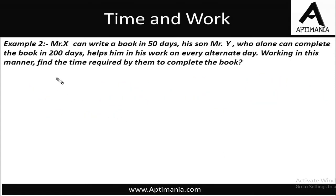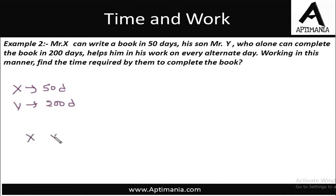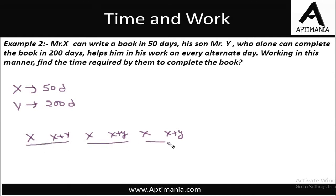Next example: Mr. X can write a book in 50 days and his son Mr. Y can alone write the book in 200 days. Now Y helps him in his work on every alternate day. That means on the first day X alone was working, on the second day X and Y both are working, on the third day X alone, fourth day X plus Y both, fifth day X alone, sixth day X plus Y both, and so on. So here also the cycle is of two days. Let us assume the total work to be the LCM of 50 and 200, which is 200.